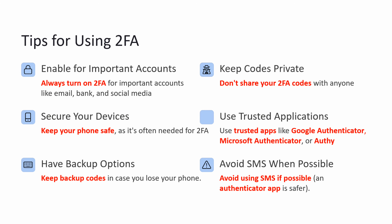Tips for using two-factor authentication: always turn on two-factor authentication for important accounts like email, bank, and social media. Don't share your two-factor authentication codes with anyone. Keep your phone safe because it is often needed for two-factor authentication. Use trusted apps like Google Authenticator, Microsoft Authenticator, or Authy. Keep backup codes in case you lose your phone. Avoid using SMS if possible because authenticator apps are safer.